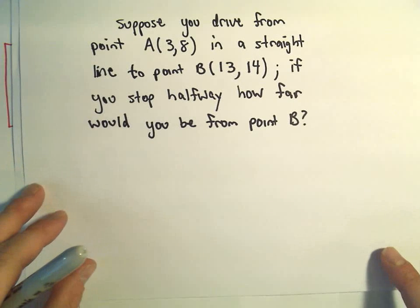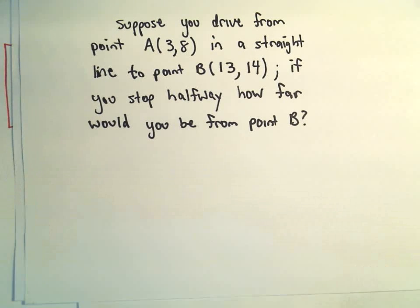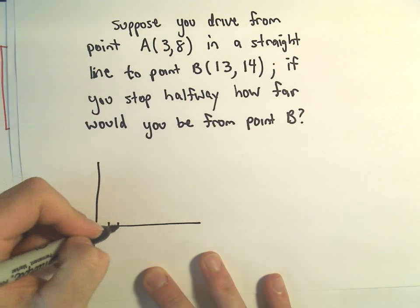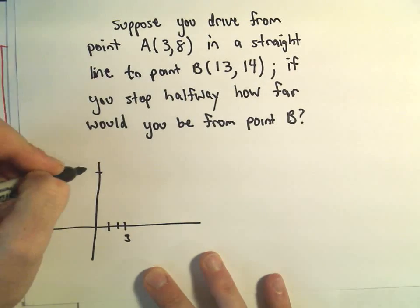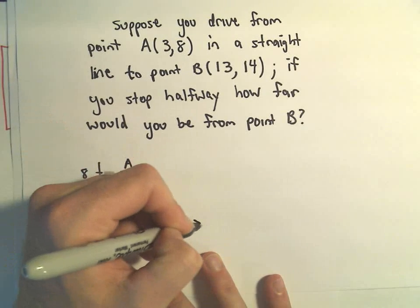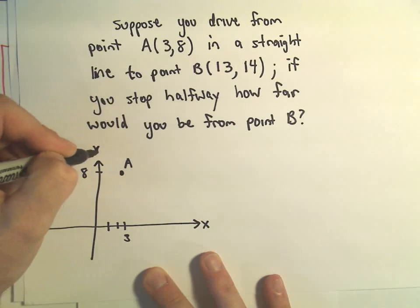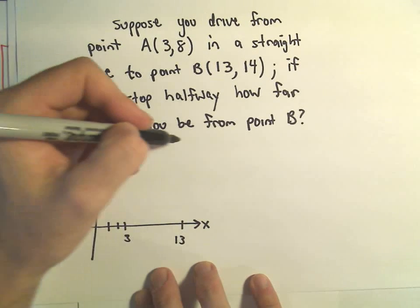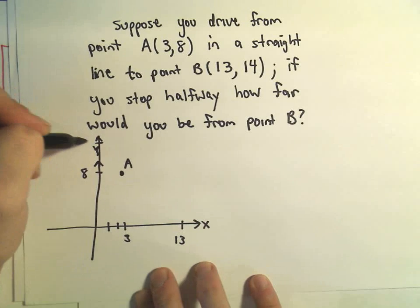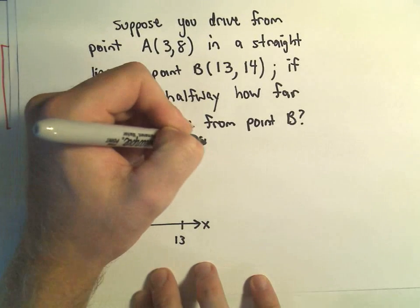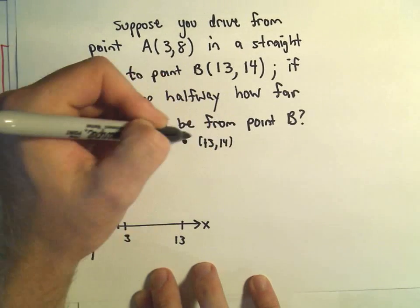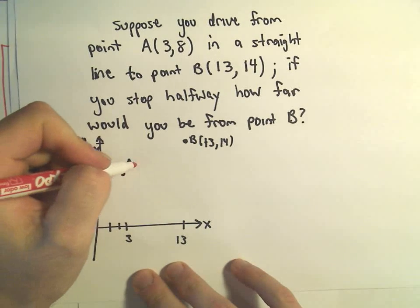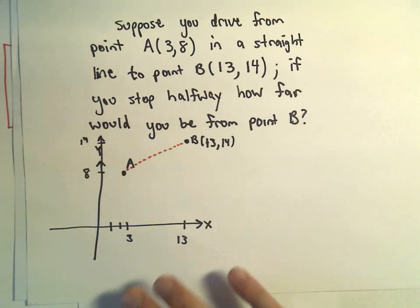Suppose you drive from a point A, which is sitting at the coordinates 3 comma 8, so we go over 1, 2, 3 units, up positive 8 units. There's our point A. And suppose you're trying to get over to the coordinates of B, which are up there at 13 and 14, and you're driving in a straight line straight to that other point.